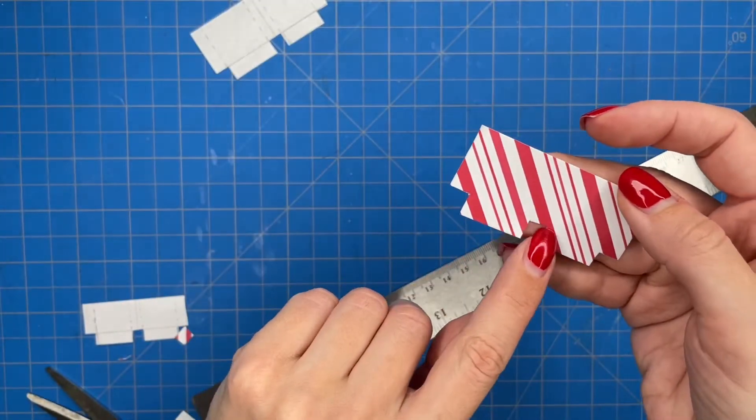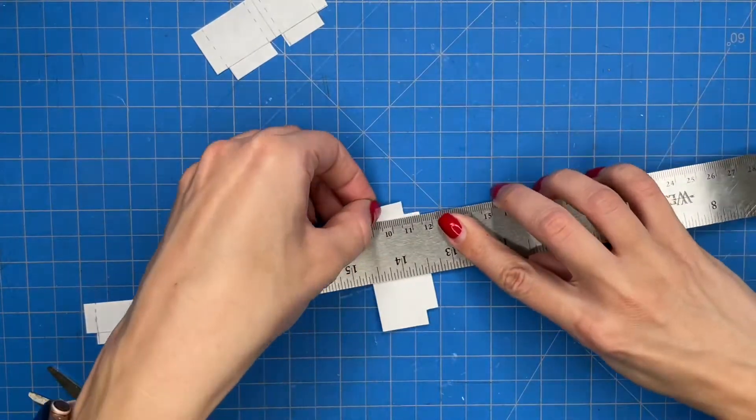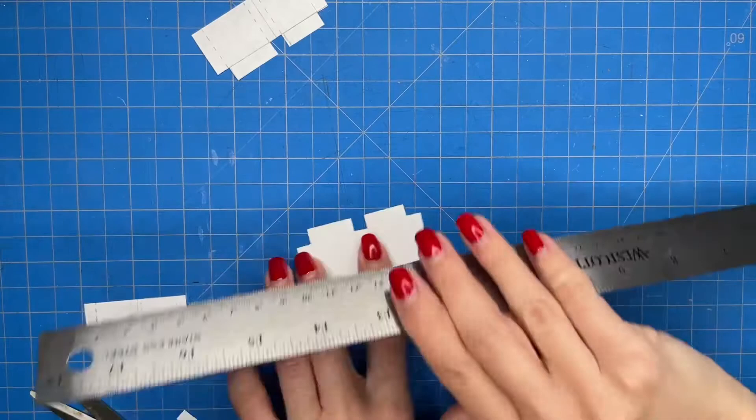And along these corners is where you will be making your folds. So I like to grab a ruler or just something with a straight edge to fold across so that you get a nice clean crisp line.